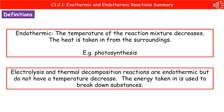Photosynthesis is an endothermic reaction. Two other endothermic reactions that we have encountered are electrolysis and thermal decomposition. Neither of those have a temperature decrease, but they are endothermic reactions. Energy is being taken in from the surroundings, but that energy is being used to break down the substances. Electrolysis is splitting up chemicals using electricity, and thermal decomposition is where we're breaking down chemicals using heat.